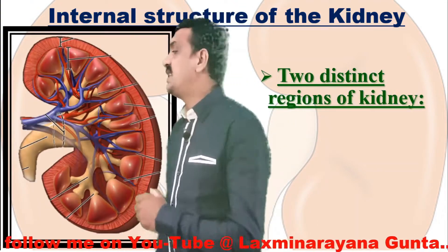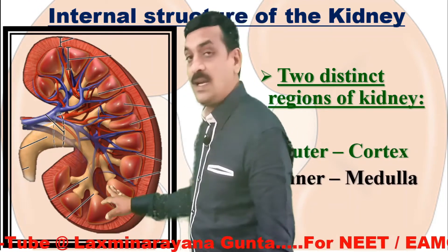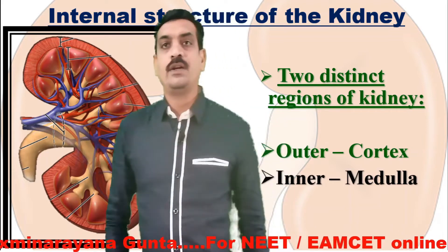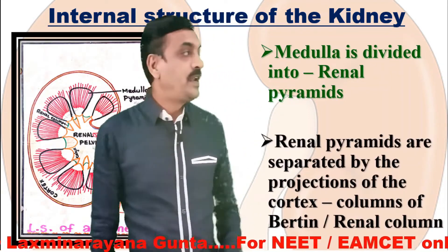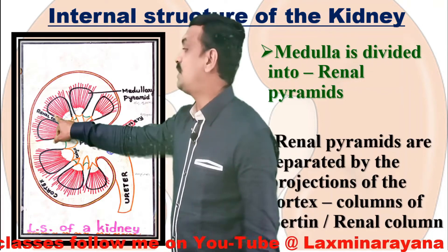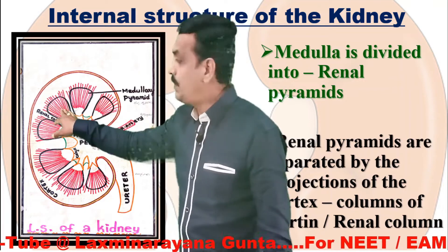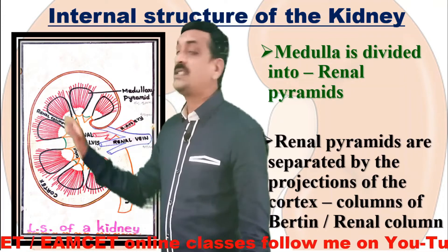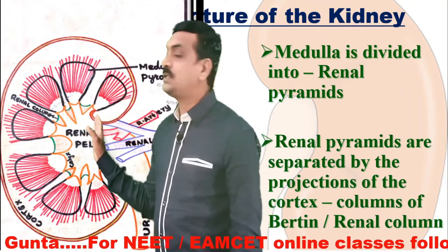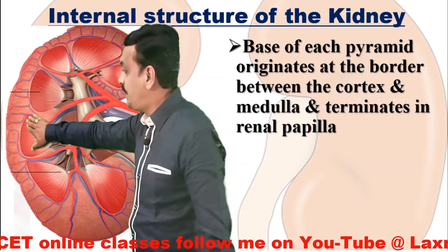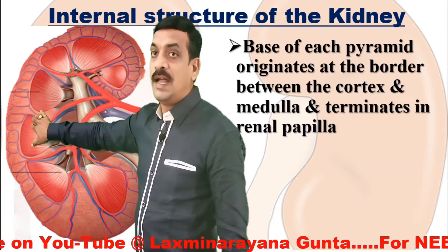There are two distinct regions in a kidney. The outer dark colored region is called the cortex, and the inner light colored region is called the medulla. This medulla is divided into renal pyramids. These renal pyramids are separated by projections of the cortex called columns of Bertin, also called renal columns. The base of each pyramid originates at the border between the cortex and the medulla.